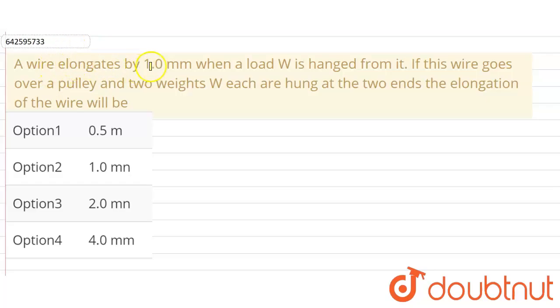Hello everyone, so our question is: a wire elongates by 1 mm when a load W is hanged from it. If this wire goes over a pulley and two weights of weight W each are hanged at the two ends of the wire, the elongation of the wire will be.